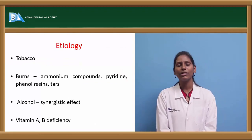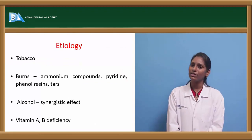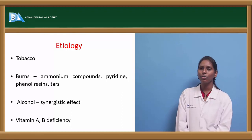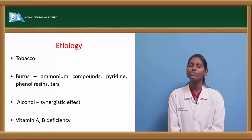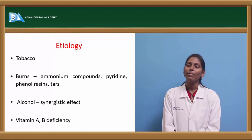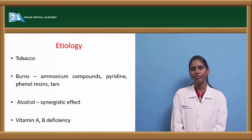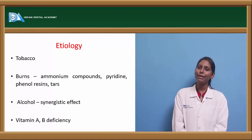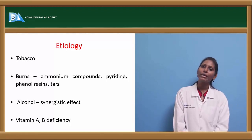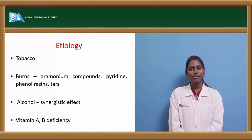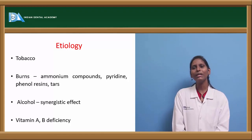The most common etiology for leukoplakia is tobacco — both smokable and chewable tobacco forms. Leukoplakia is more commonly associated with cigarette smoking than chewable tobacco, and even with burns. Ammonia compounds, peridin, phenol, resins, and tars are also associated with leukoplakia.